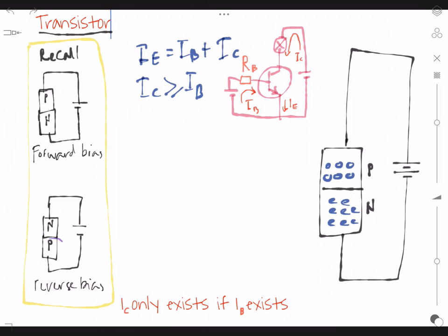So for reverse bias, there is no current here. Ok, so this is what we have done before.